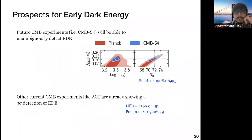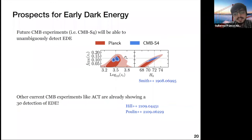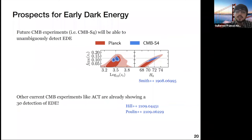Regarding the prospects of this model, future CMB experiments such as CMB-S4 will be able to unambiguously detect early dark energy, as shown by forecast analyses using mock CMB Stage-4 data. Moreover, current CMB experiments like ACT are already showing a detection of EDE at almost three sigma, as shown in a paper that appeared last month. The current situation of EDE is still not fully settled, and we need more precise data to determine whether this resolution to the Hubble tension truly survives.